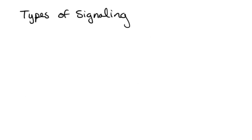We can also talk about types of signaling. The different types that we have are mostly differentiated from each other based on the distance involved — and that's going to be the distance from the signaling cell to the target cell that it's trying to affect. We do want to keep distance in mind as we go through and talk about these different types.